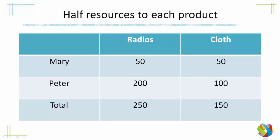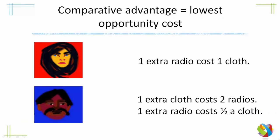Now let's see what happens if they try to specialise in producing the thing that they are relatively better at. To calculate this comparative advantage, we need to find out who has the lowest opportunity cost. So: comparative advantage equals lowest opportunity cost.